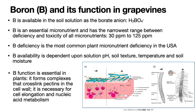Boron is an essential micronutrient and has a very narrow range between its deficiency and its toxicity — in fact, it's got the narrowest range of all the micronutrients. A range of between 30 parts per million — anything less than that would be deficient — and 125 parts per million — anything above that would start to become excessive and eventually toxic to the plant. It has a very narrow range, and the plant needs to tightly control this. It turns out that boron deficiency is the most common plant micronutrient deficiency in all of the USA, so it is quite common.